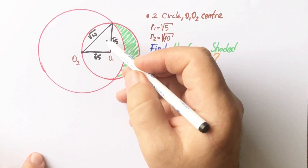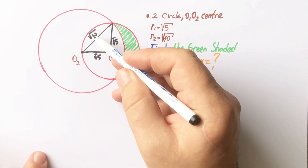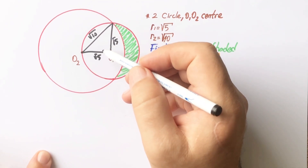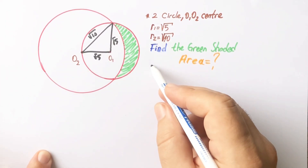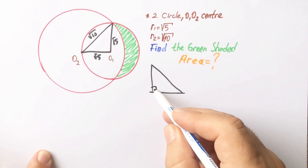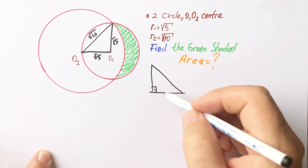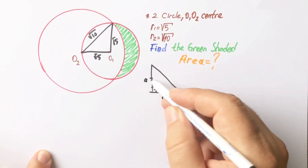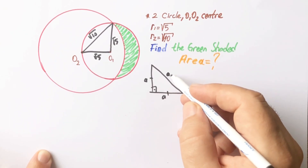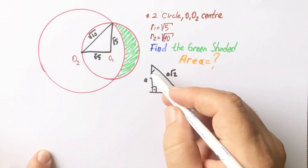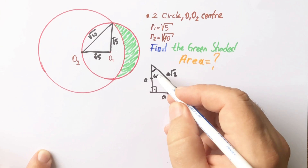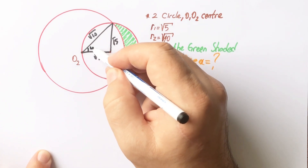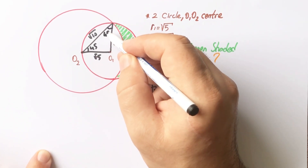If you notice, we get an isosceles right triangle. Let's recall that in an isosceles right triangle, these two sides must be equal — let's call them 'a' — and the ratio of the hypotenuse to these sides must be √2. That means these two angles must each be 45 degrees.